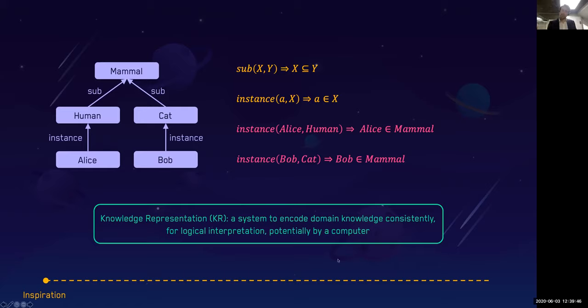What we want to be doing is modeling. If we've got something like a mammal and we have subtypes of those mammals, we may have humans, we may have cats, and we may then create instances of those types. Alice can be a human. If we create those instances, we can then create certain conclusions. If Alice is an instance of a human, given that a human is a subset of a mammal, we can now say that Alice is therefore a mammal.